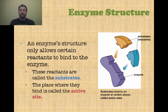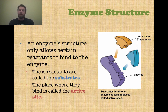Substrates will bind to enzymes on the active site — that is where the binding takes place. The purple piece on the bottom left is the enzyme, and the substrates, or the reactants, are the other two pieces on top. There is a lock-and-key model here, where certain pieces on the substrates will fit into certain pieces of the enzyme. If those pieces do not fit, then we've got the wrong enzyme-substrate match. The only place that these substrates can bind is on the active site.